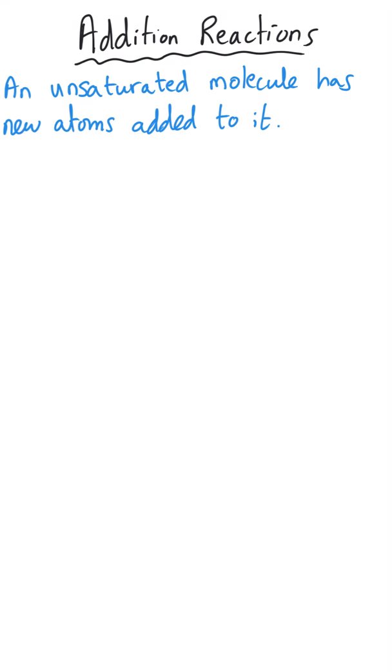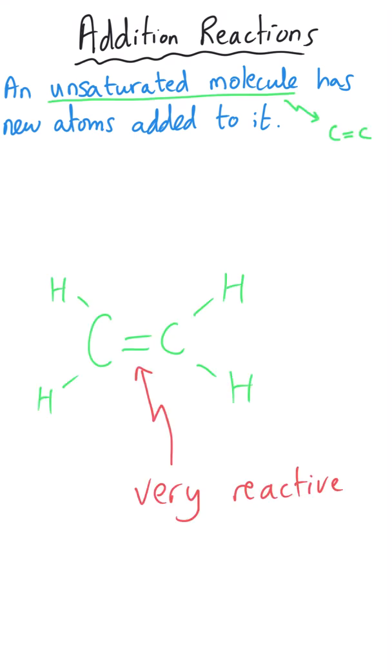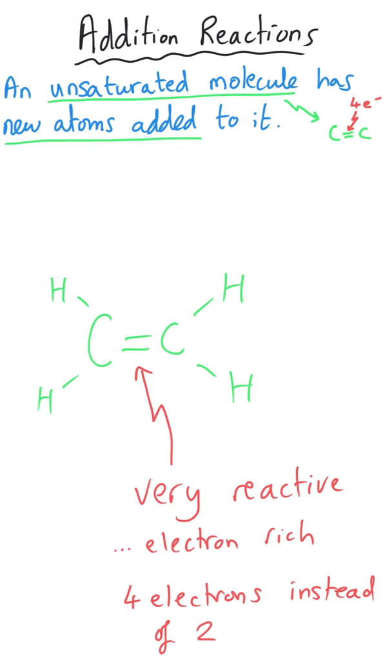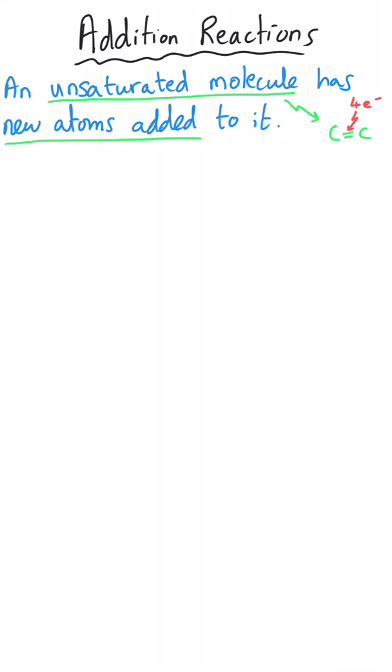Alkenes are really, really useful because they are really reactive and that makes them very valuable. The reason that they're really reactive is because of the double bond that they've got present. That double bond is very electron rich. It has got four electrons in it instead of the typical two. The type of reactions alkenes generally undergo are called addition reactions. And that's where an unsaturated molecule, such as an alkene, it doesn't have to be an alkene, has new atoms added to it. And so this is effectively a reverse of the elimination reactions that we've just looked at.